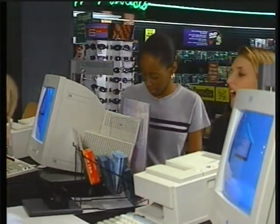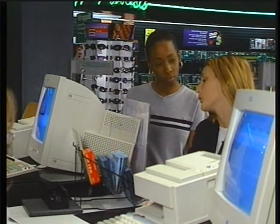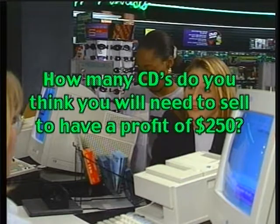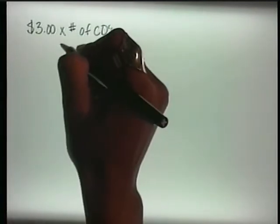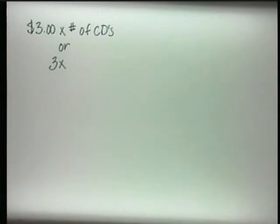I know they bought these CDs at the wholesale price for $3 and now they're trying to sell them to me for $5. How many CDs do you think you'll need to sell to have a profit of $250? To determine the profit, we'll need to develop equations or functions. How would you write the wholesale price of the CDs knowing that they cost $3 each? You would write $3 times the number of CDs, or you can use 3x. Since we don't know the number of CDs, let the variable x represent the number of CDs. Therefore, the term 3x represents the wholesale price of any number of CDs.